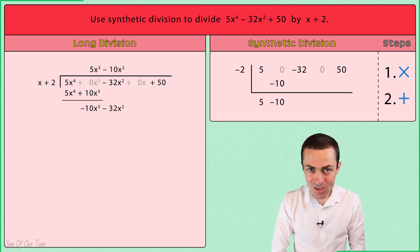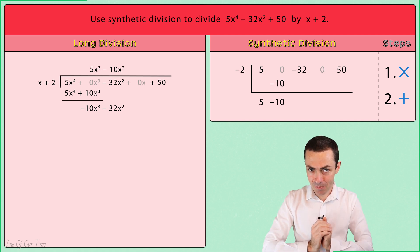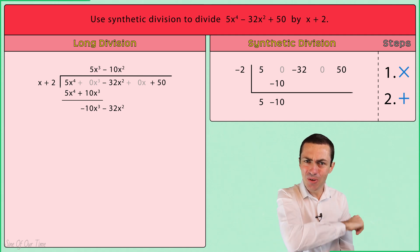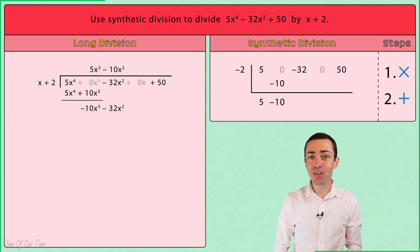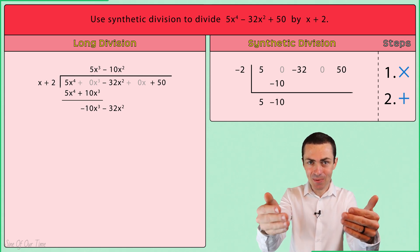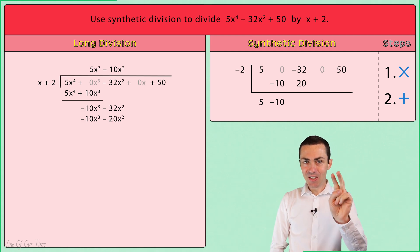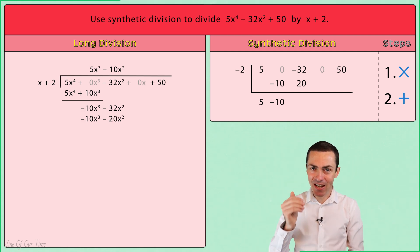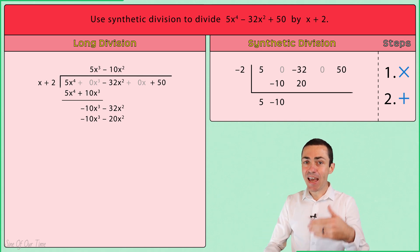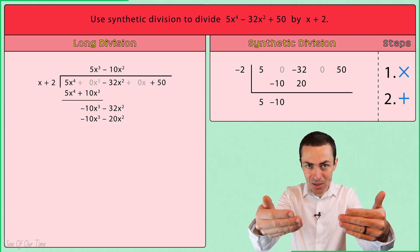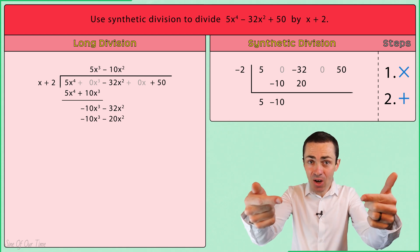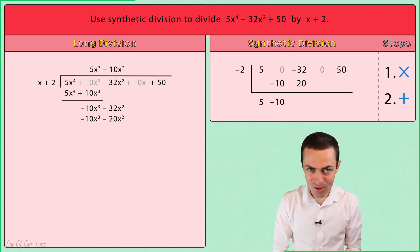Now we just keep on repeating those same steps. Step one, multiply. We take the negative 2 and we multiply it by the negative 10 in order to give us positive 20, which we write one column over beneath negative 32. Step two, we add. We take the negative 32, we add 20 in order to give us negative 12, which we write in the same column below the synthetic division symbol.